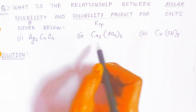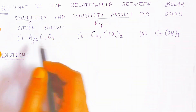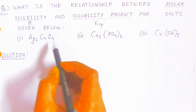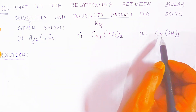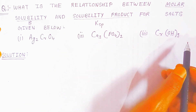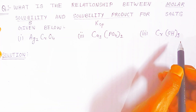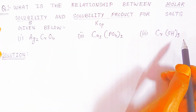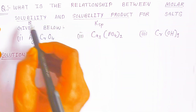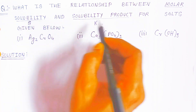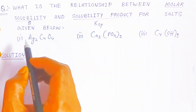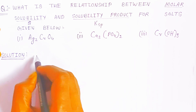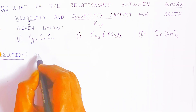Three salts are given: first is silver chromate, second is calcium phosphate, and third is chromium hydroxide. We have to find the relation between molar solubility S and Ksp for each of these three salts.